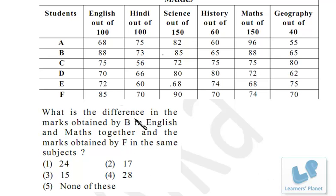The next question is: what is the difference in the marks obtained by B in English and Maths together, and the marks obtained by F in the same subjects? Now the first thing that comes to mind is to convert the percentages into actual marks, but don't do that — it will be really time-consuming. You can solve this problem without even using paper and pen.